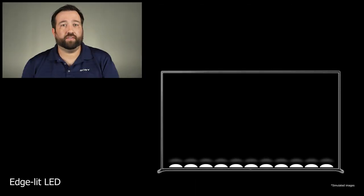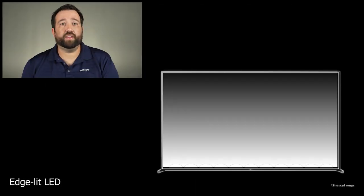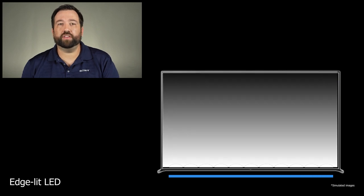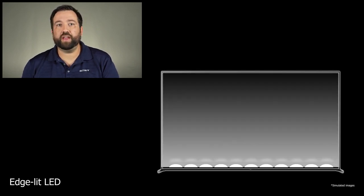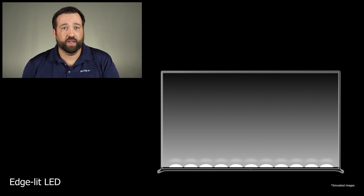To help improve black levels, we need to look at lighting systems that can dynamically alter their brightness. The oldest dynamic lighting system is EdgeLit. With EdgeLit TVs, in most cases there's a row of LEDs placed along the bottom edge of the TV, shining upwards to the top of the TV. This creates a series of lighting columns that extend the entire height of the television.